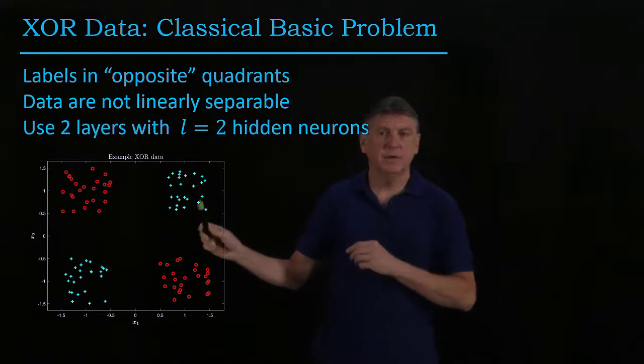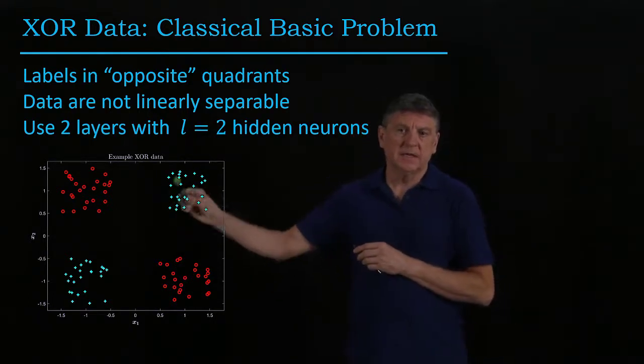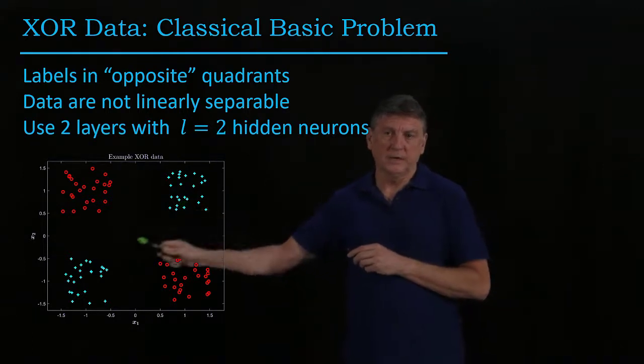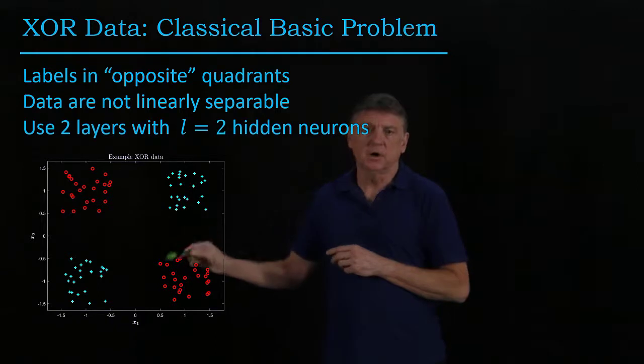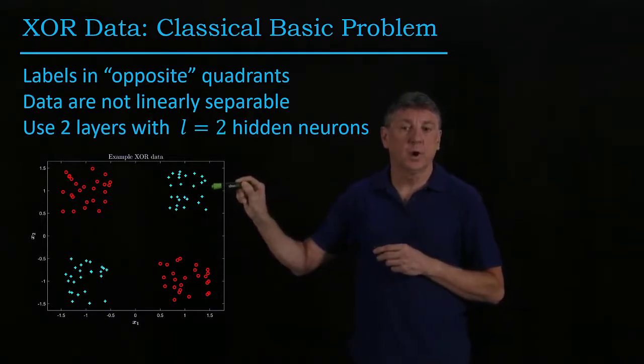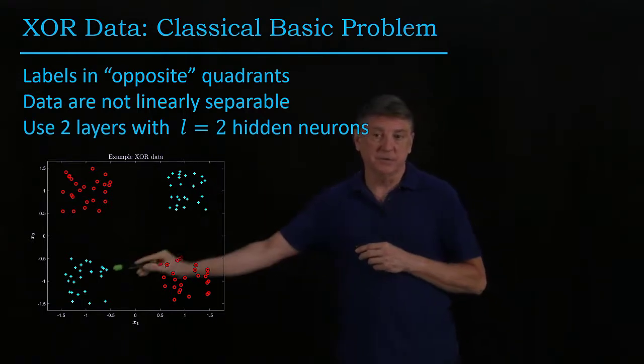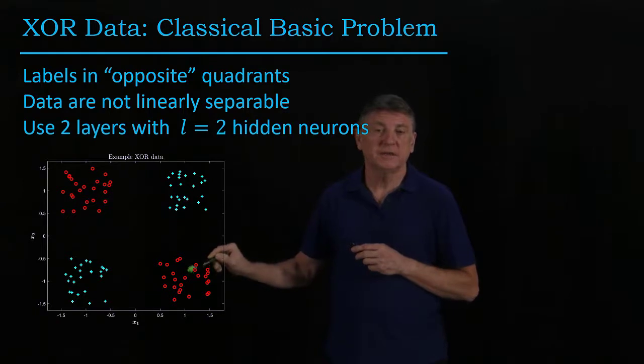So here, what I've done is I've generated a bunch of random data, and this is all class one, and this is also class one, and then these are class zero. That is, I'm giving the label y equals one to these data vectors, and then I'm giving the label y equals zero to these data vectors.